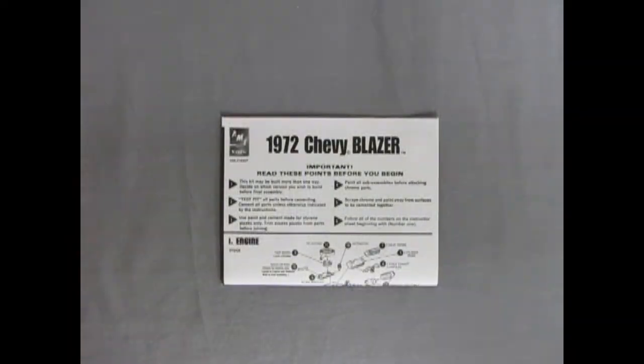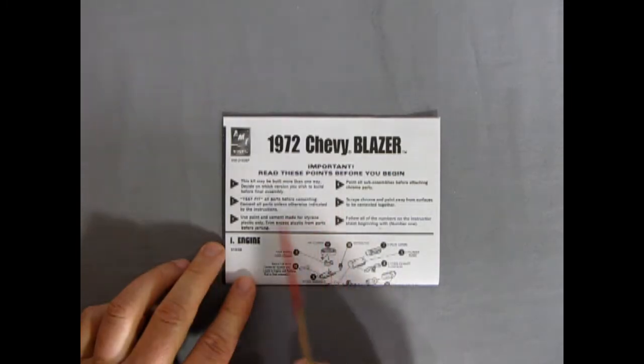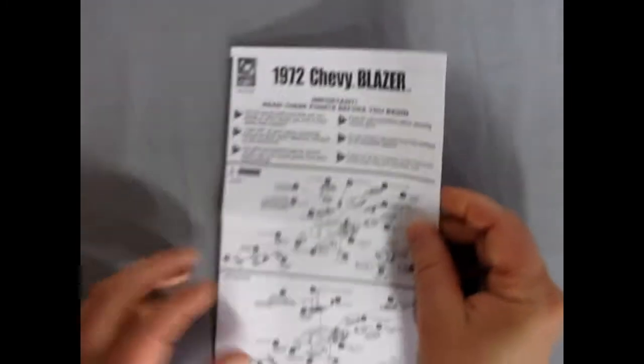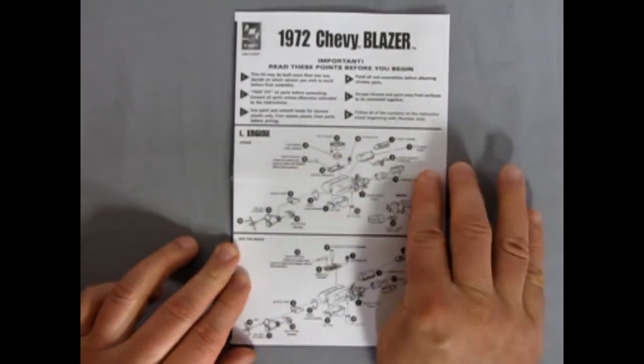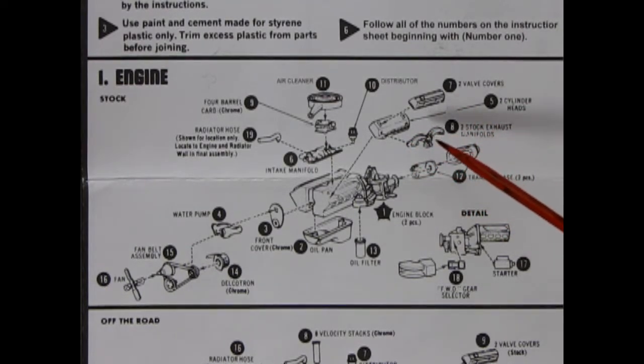Here we have our 1972 Chevy Blazer instruction sheets. It does say important to read these points before you begin. There's only six, so that's not too many points. Opening this up here, you can see it's not too much on the instruction sheet. Here we have our engine assembly plans. And what we can see here is the engine block being two pieces. There is this big massive four-wheel drive transmission sitting in here. The transfer case and the transfer case front.